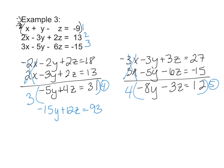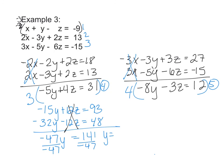Now when I multiply equation 5 times 4, I get -32y - 12z = 48. Add it together, my z's cancel, and we get -47y is equal to 141. And when I divide both sides by negative 47, I get y = -3.